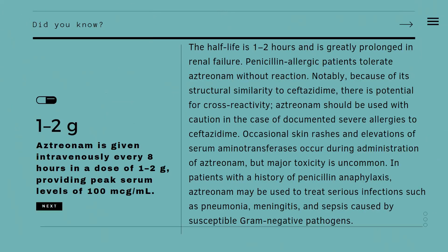Regarding the dosage of aztreonam: it is given intravenously every eight hours in a dose of one to two grams, providing peak serum levels of 100 micrograms per ml. So if you give a patient one to two grams every eight hours, there will be a sustained peak serum level of 100 micrograms of the drug per ml of serum.